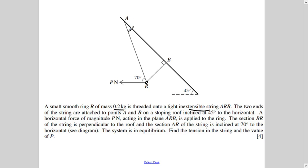And the two ends of the string - so the string is basically A, R, B. Because of this mass, it has taken this position. The two ends of the strings are attached to A and B. So here and here it is fixed. And this plane is making an angle of 45 degrees. So it is a sloping roof.